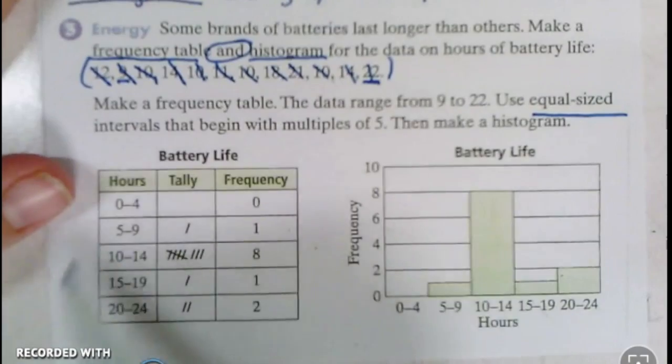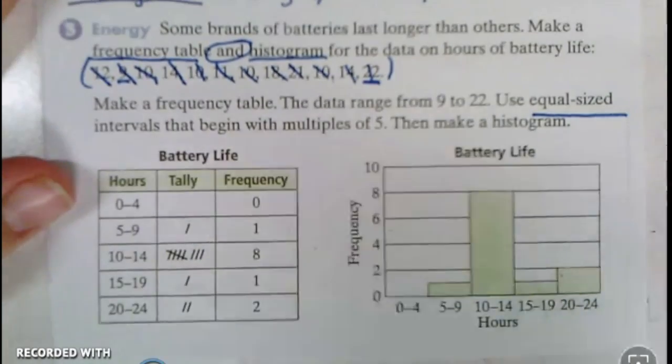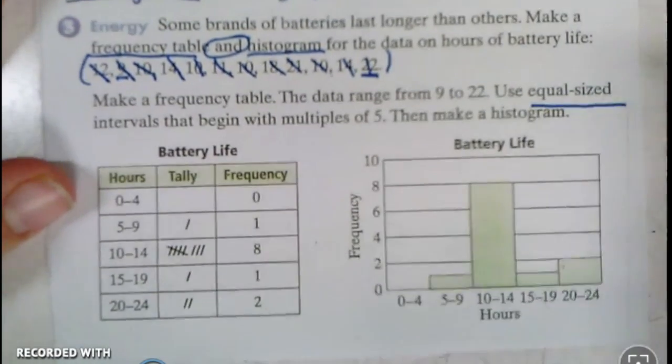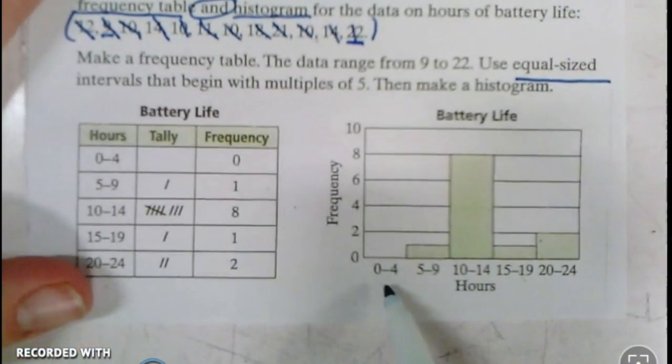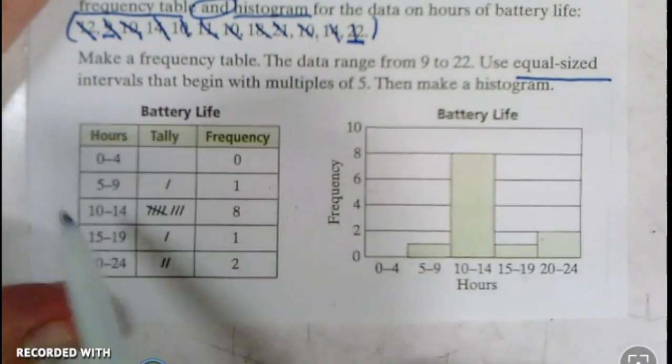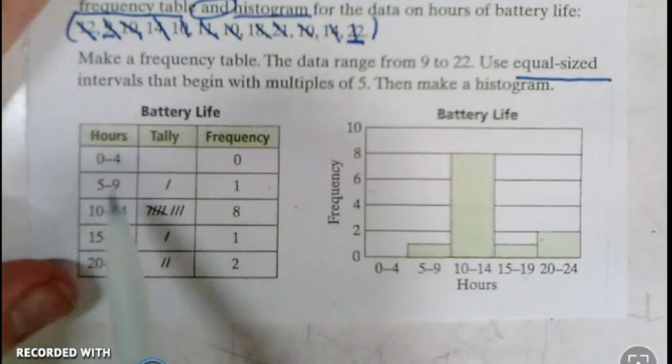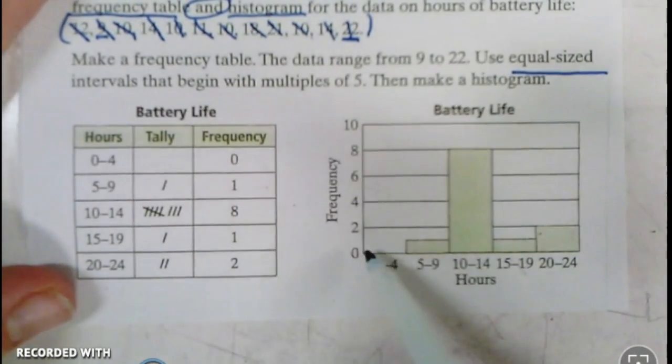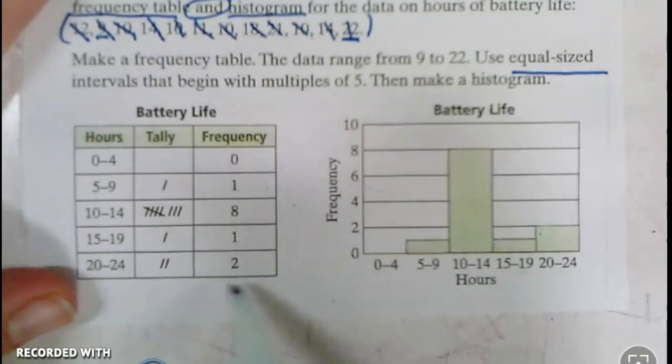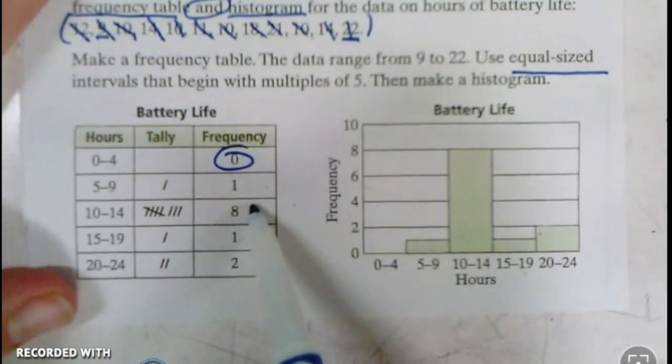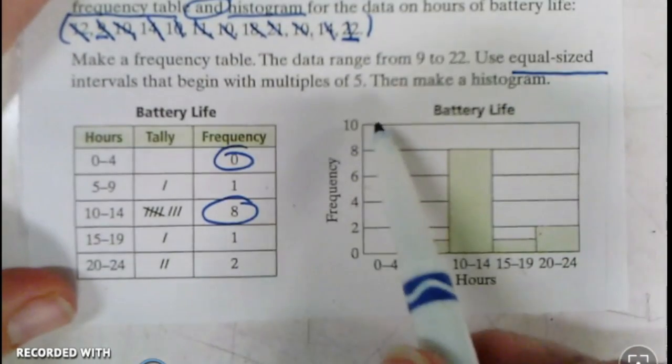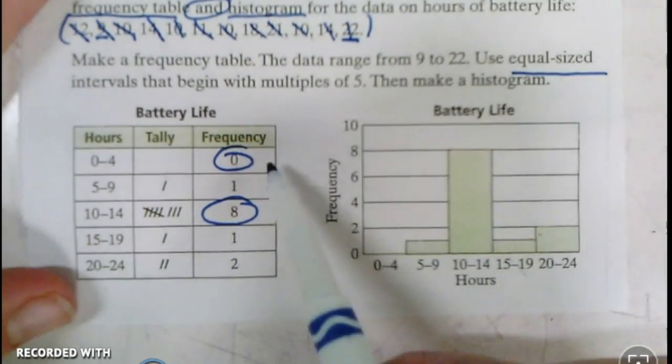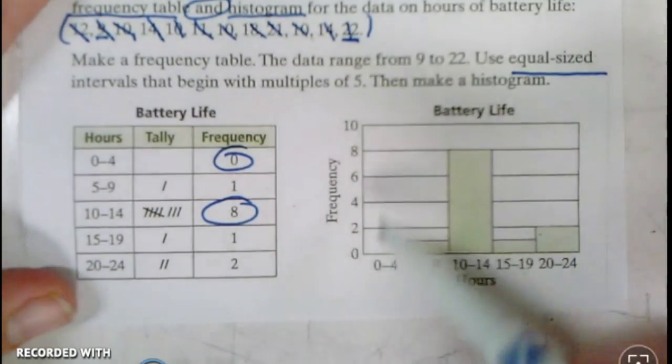Now I can take this information and put it into a histogram. On this histogram, it's just a bar graph. Down bottom, I have the same things that I wrote over here with my hours. Then on this side I have the frequency written. I look for my range, I go from zero to eight. I want to go a little higher than eight and break it into equal intervals, so I'm going to count up by twos: zero, two, four, six, eight, ten.